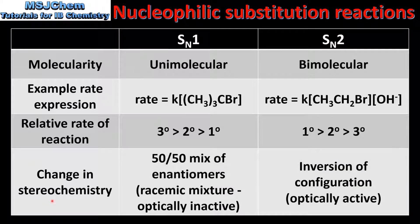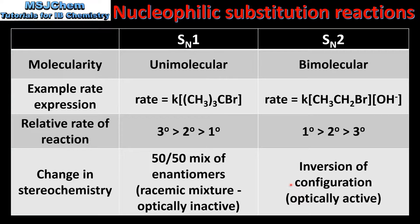And finally we have the change in stereochemistry. For SN1 the products are a 50-50 mix of enantiomers, producing a racemic mixture which is optically inactive. The SN2 reaction is stereospecific — there is an inversion of configuration, which means the product is optically active.